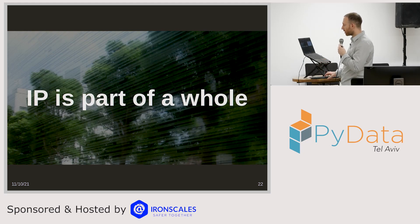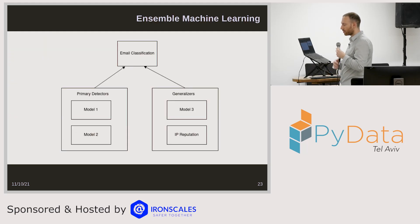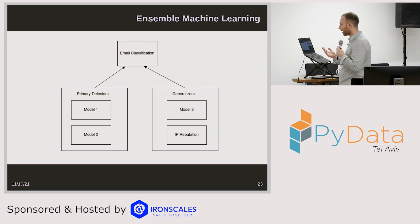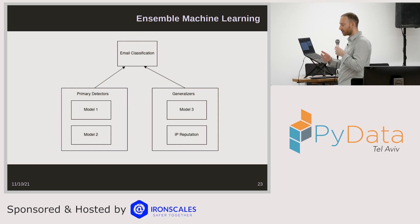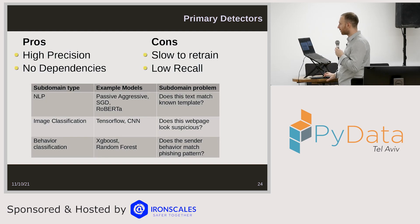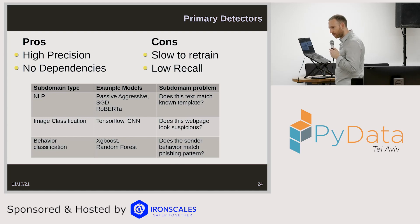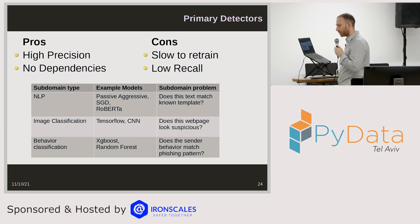What does that mean for our inspection pipeline as a whole? IP reputation is one part of our machine learning system. We divide it into two categories: primary detectors, which detect an email with no context involved — just using templates or basic facts about the email; and generalizers, which use the predictions from the first model and try to extend them to other emails, for example classifying based on clustering. The most important metric we use is precision, because we want our models to not detect any false positives.